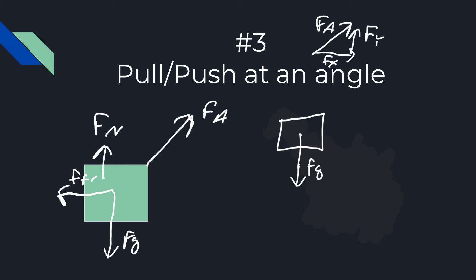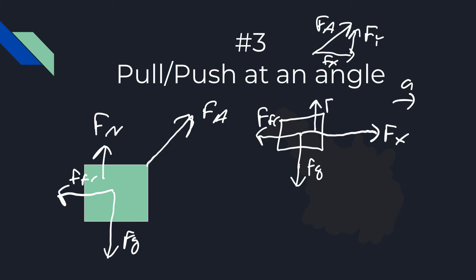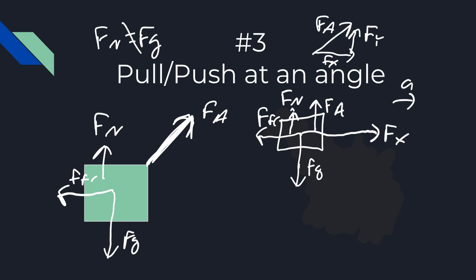In the component free body we have gravity down, friction to the left, the applied force in the x direction, and then the upward component of the applied force. If there is an acceleration, the horizontal force should be drawn larger than the friction. One key concept is that if you're pulling up at an angle, the normal force is not going to be equal to gravity — the normal force and the applied vertical component together add up to the force of gravity.